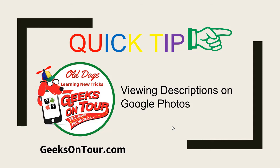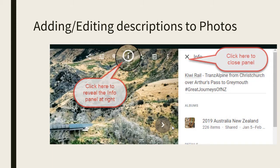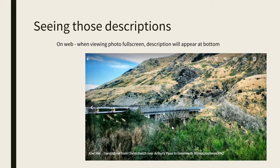Hi, this is Chris Gould and I just have a quick tip from Geeks on Tour on viewing descriptions on Google Photos. There are lots of times that you want to put some information about a photo. On a computer you click that 'I' and it opens up an information panel on the right, and there's a place for you to write a description. Then you can close the panel. When you want to see those descriptions, just viewing the picture full screen, you should see any description on a computer shown down there at the bottom.